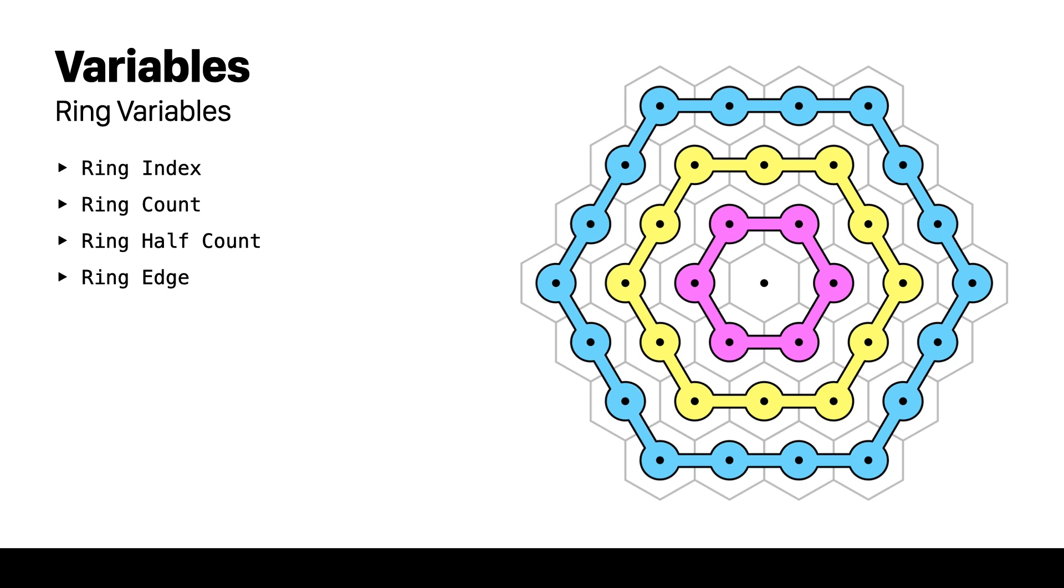While developing the generator I found it extremely helpful to expose the ring variables as attributes for debugging in the spreadsheet. For this breakdown I'm going to be using a hexagon with three rings as an example which I color coded to be more visually distinct. Let's see the ring variables that we will be using.